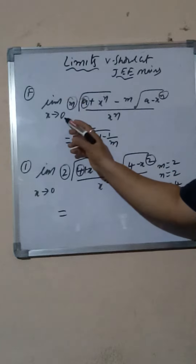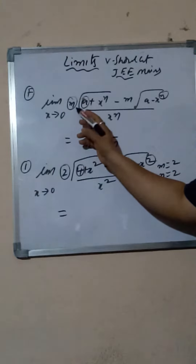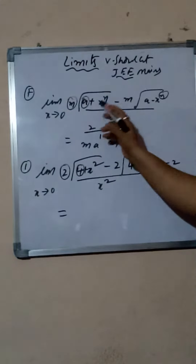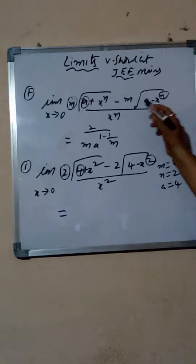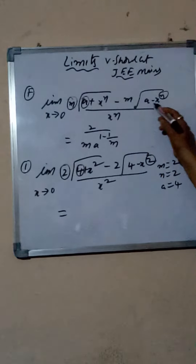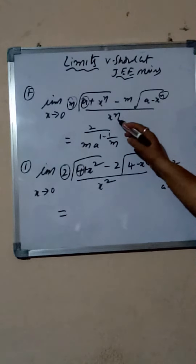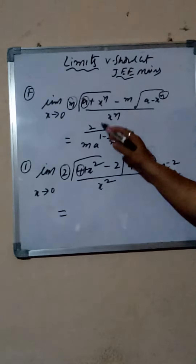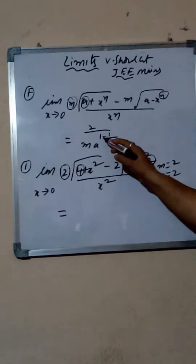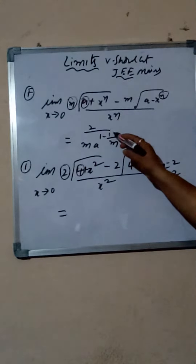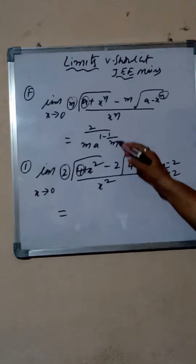The formula is: limit x tends to 0, M-th root of (A plus x) power N minus M-th root of (A minus x) power N, divided by x power N, equals 2 divided by M, into A power (1 minus 1 by M).